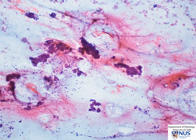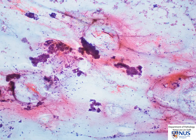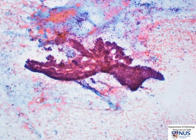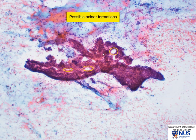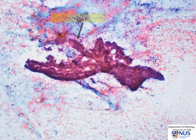Here is another area showing these little small branching tissue fragments. Some of them almost have a suggestion of a papillary or micro-papillary architecture. Here is a higher magnification view showing this rather complex-looking tissue fragment. There is a hint of some acinar formations or gland openings in some areas, and in other areas we get the idea that there may be a row of columnar cells with nuclear palisading at the edges.